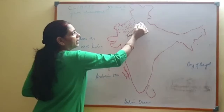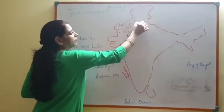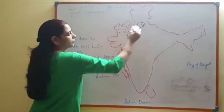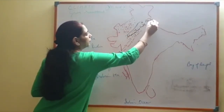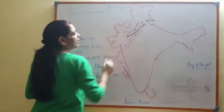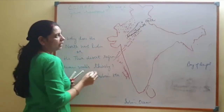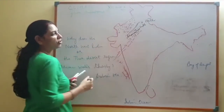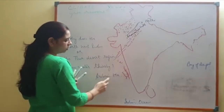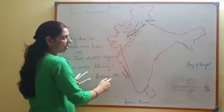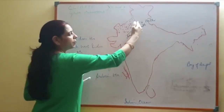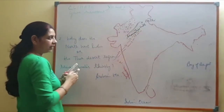That branch strikes Delhi — Delhi is here — and brings rains at Delhi. So this part remains dry. The Southwest monsoon winds of the Arabian branch fail to bring rains because it moves parallel to the Aravallis.